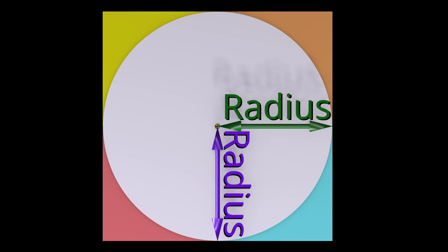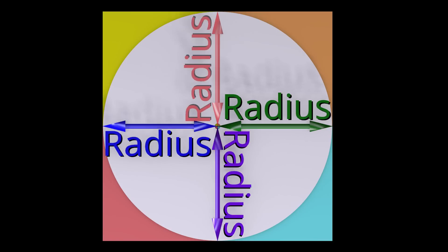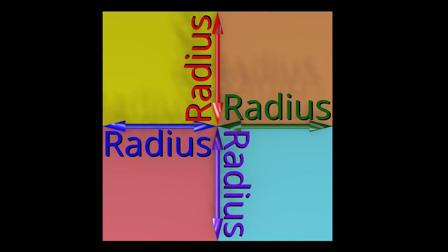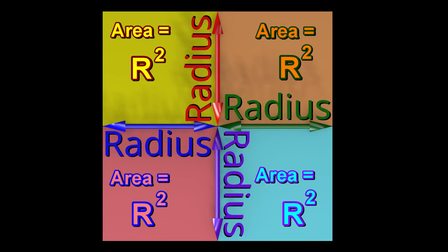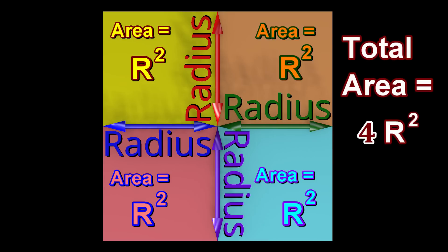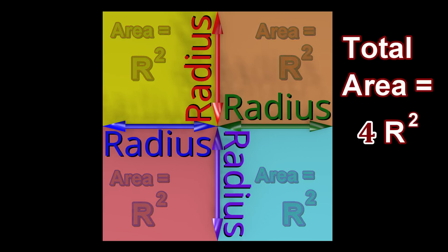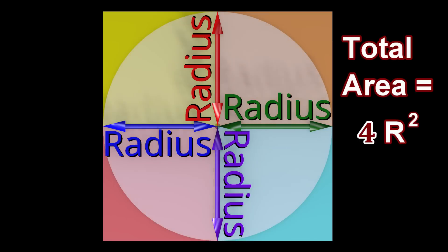The length of each side of each square is equal to the radius of the circle. Therefore, the area of each square is the radius squared. The sum of the area of all four squares is therefore four multiplied by the radius squared. We can see that the area of the circle needs to be slightly less than the sum of the areas of these four squares.